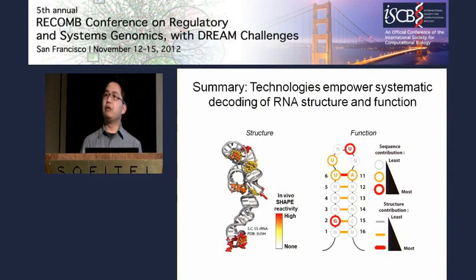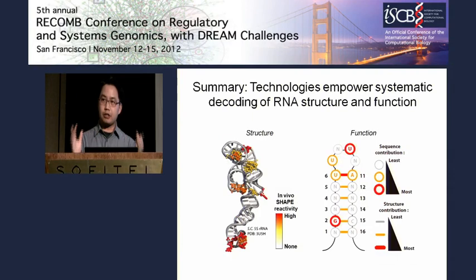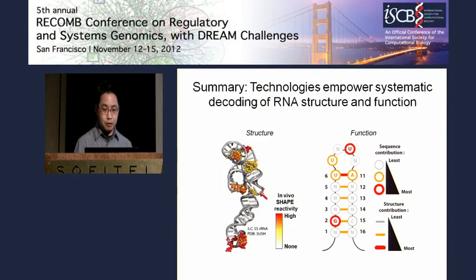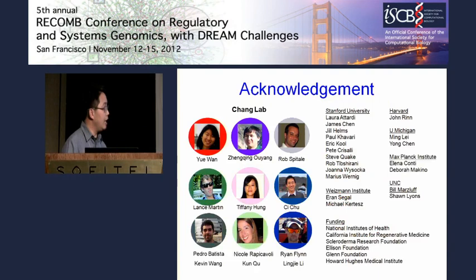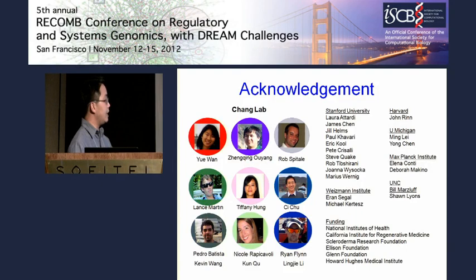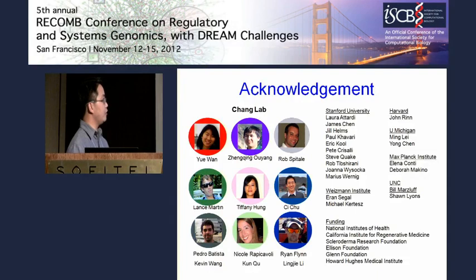In summary, I've told you about several new technologies that will empower systematic decoding of RNA structure and function. There's PARS for genome-wide description of RNA structure. We can now describe these structures in vivo, and through systematic mutagenesis assign function to different RNA motifs. I think the future should be bright — a very interesting time for global discovery in this space. I've been fortunate to work with many talented individuals. The work on PARS was done by Yue Wan, a graduate student who will soon have her own group at the Genome Institute of Singapore. Zenqing Oyeng developed the Seekfold algorithm. The in vivo SHAPE work was done by Rob Spitale, in collaboration with Eric Kuo's lab at Stanford. And Lance Martin developed the RNA-Mitomi work together with Steve Quake.